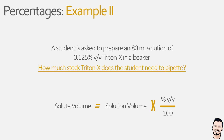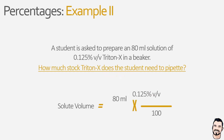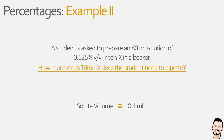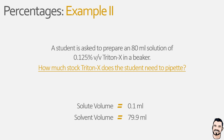Adding information from our question into the equation gives us: solute volume equals 80 millilitres multiplied by 0.25 percent volume per volume divided by 100. Completing the division gives us solute volume equals 80 millilitres multiplied by 0.0025, which is now unitless. We can then solve this equation giving us a solute volume of 0.1 millilitres. This means the student will need to pipette 0.1 millilitres of the stock Triton X solution into the beaker and then make this up to 80 millilitres by adding 79.9 millilitres of solvent.